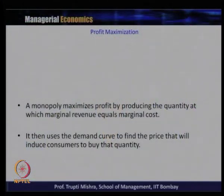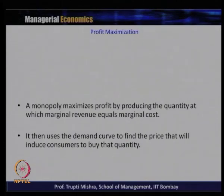Now we come to profit maximization of the monopoly firm. The profit maximizing rule is that marginal cost equals marginal revenue (first order condition), and the slope of MC should be greater than the slope of MR (second order condition). The monopoly maximizes profit by producing the quantity at which MR = MC, then uses the demand curve to find the price.